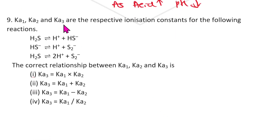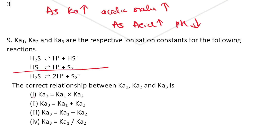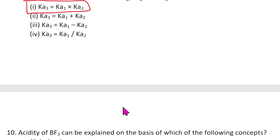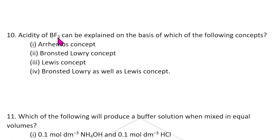Ninth question: K₁, K₂, K₃ are given for three reactions. Find the correct relationship. If you add those reactions, H⁺, 2H⁺, HS⁻ get cancelled. When reactions are added, their equilibrium constants are multiplied: K = K₁ × K₂ × K₃. Hence the answer for this question is the first option.